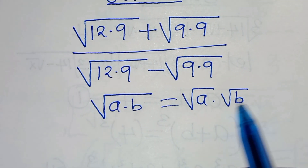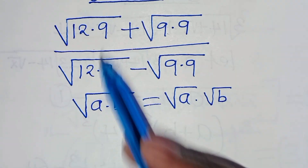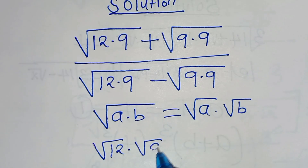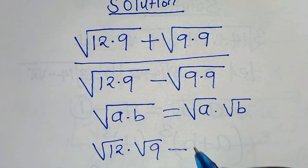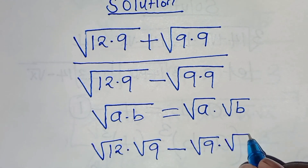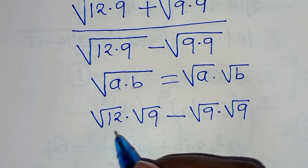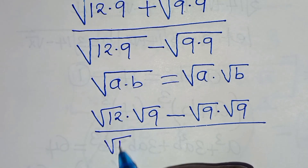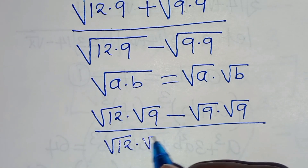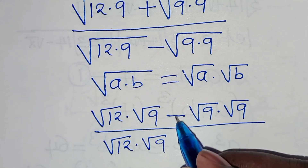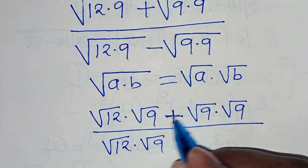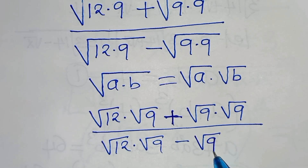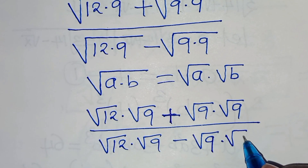Now applying this exponent property, we have square root of 12 times square root of 9, plus square root of 9 multiplying by square root of 9, divided by square root of 12 times square root of 9, subtract square root of 9 multiplying by square root of 9.